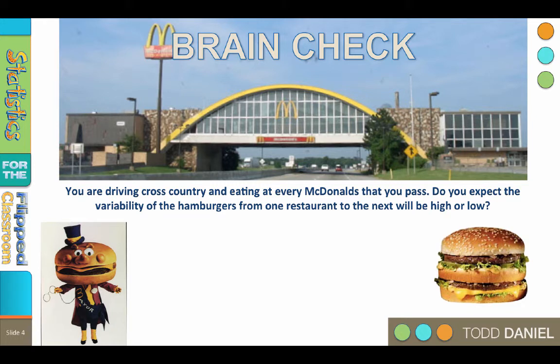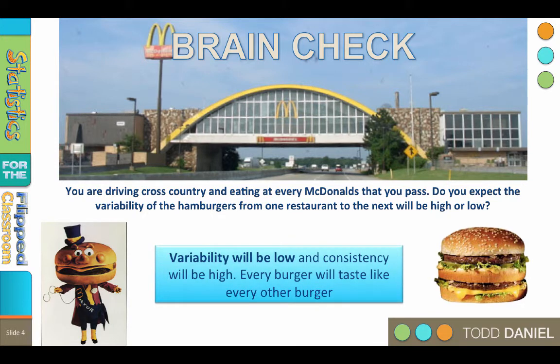So imagine that you are driving cross-country and you decide to stop and eat a hamburger at every McDonald's that you pass. Do you expect the variability of the hamburgers from one restaurant to the next to be high or low? Will the consistency be high or low? The variability will be low. Consistency will be high. Every burger will taste like every other burger. And that is why we like low variability or high consistency.